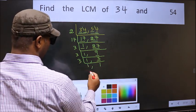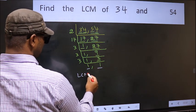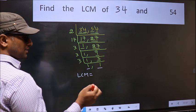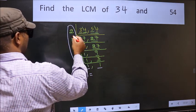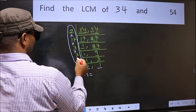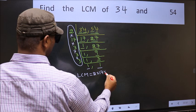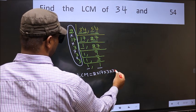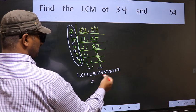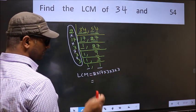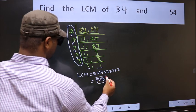We got 1 in both places. So our LCM is the product of these numbers: 2 × 17 × 3 × 3 × 3. When we multiply these numbers we get 918, which is our LCM.